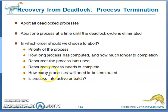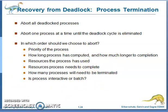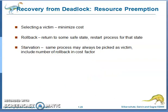Another factor is how many processes will need to be terminated — this is the cascading effect. Once you terminate one process, there may be a chain of processes you need to terminate as well. The last factor is whether the process is interactive or batch. These are the factors used to choose which process to abort.